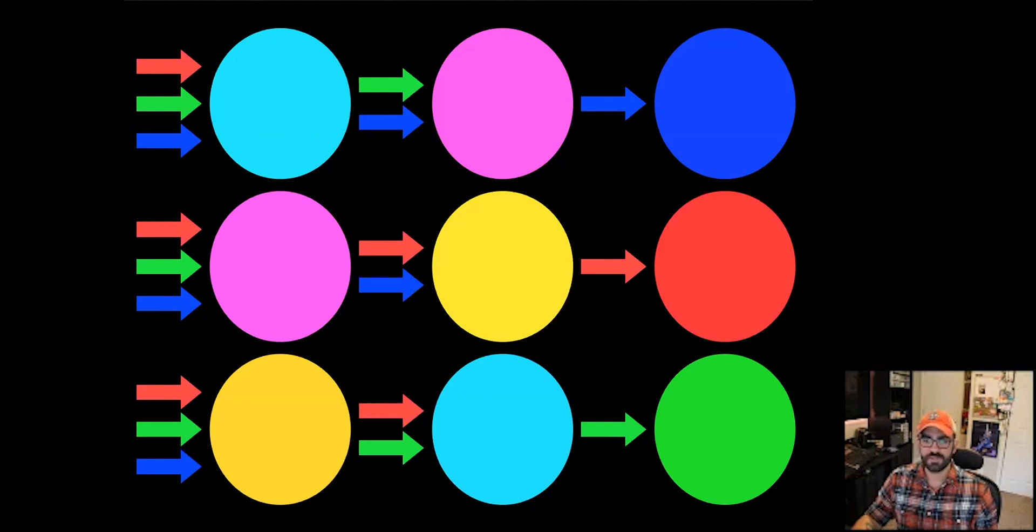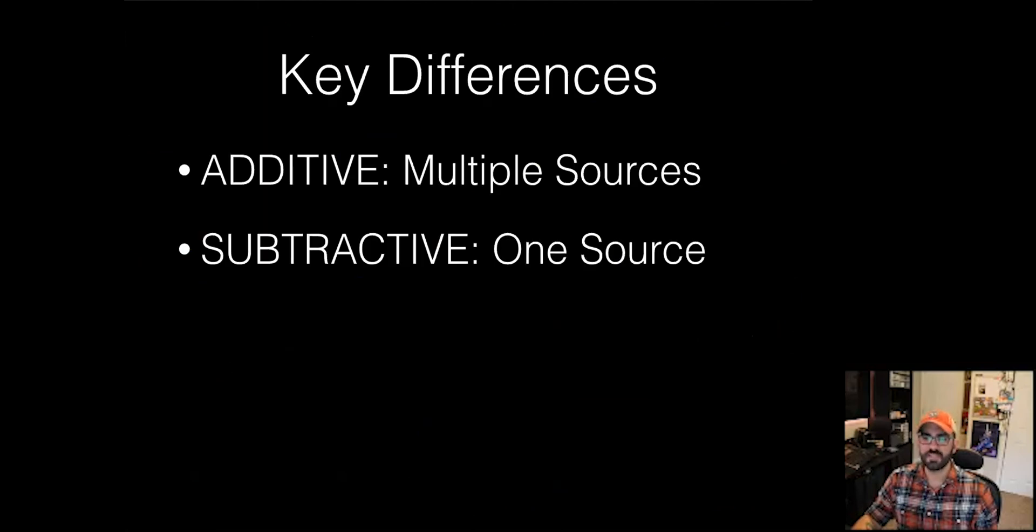Key difference here: when we're talking about additive mixing, for the most part we're talking about multiple sources. When we're talking about subtractive mixing, we're talking about it happening in a single source.